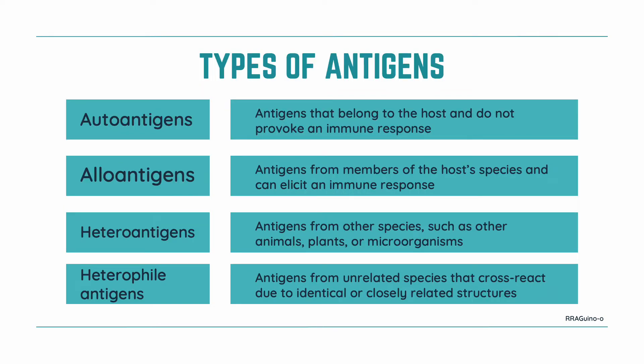Let's now talk about the different types of antigens. First, we have our autoantigens. These are antigens that belong to the host and do not provoke an immune response in an immunocompetent individual. Sometimes, though, our own immune system can be overactive and react to our autoantigens — and in these cases, these are what we call autoimmune diseases.